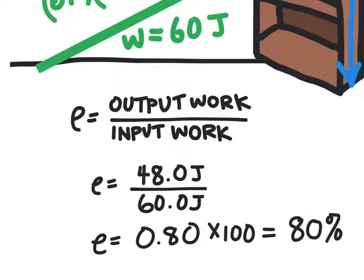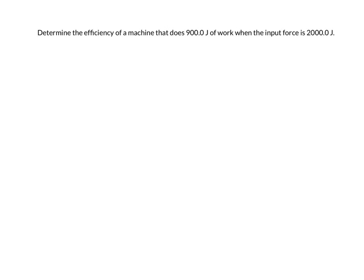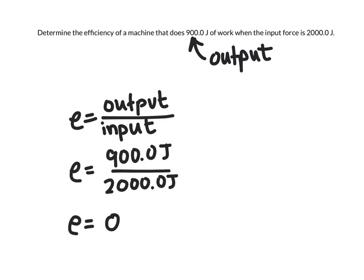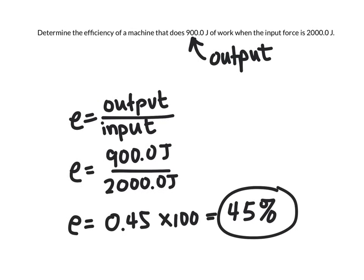Let's look at a couple of other problems so you can have a little more practice. Here's a question that asks us to determine the efficiency of a machine that does 900 joules of work when the input force is 2,000. And so this number right here, that 900 joules would be the output work. And so we can write down our equation and then plug in these numbers. And so here's our equation, output over input, and we can plug in 900 joules and divide that by 2,000 joules and we end up with an efficiency of 0.45. Again we're going to multiply that by 100 because it's better to report our answers in terms of a percent than a decimal. And so this machine is 45% efficient.